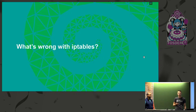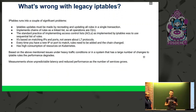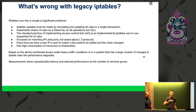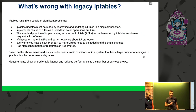Let's start from the question: what's wrong with traditional IP tables? There are several things wrong from the point of view of Kubernetes clusters. First of all, IP tables is a technology which has 20 years, and it was designed mostly for simple IP address and port matching, which is a good approach for traditional server applications — but in the era of Kubernetes clusters, it's not enough.